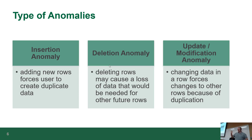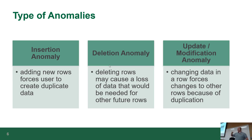A deletion anomaly means you delete a row of data and some data just goes away forever that should not go away. You could theoretically lose the fact that certain departments exist or certain courses are available because the data is not designed properly. An update or modification anomaly means if you change one row, it may force you to change rows elsewhere just to keep the data consistent.